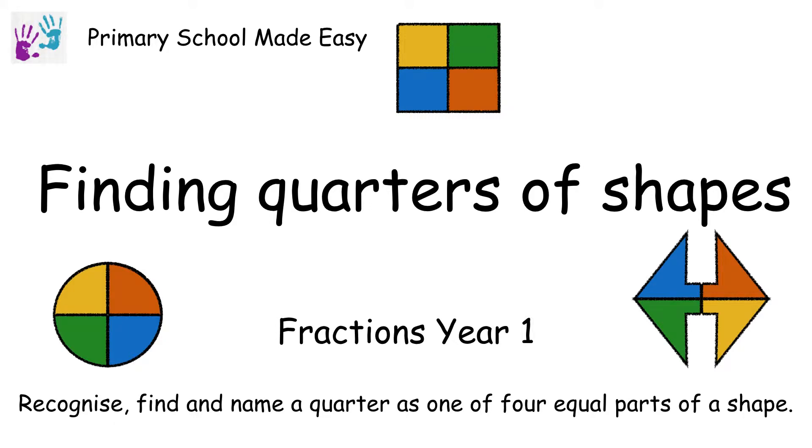Finding quarters of shapes. Here is a square. If I cut my square into four equal pieces, I would have cut it into quarters. A quarter is one of four equal parts. This is a quarter, this is another quarter, and these two pieces are quarters too.